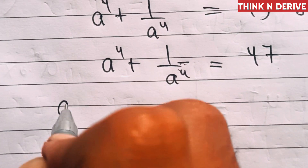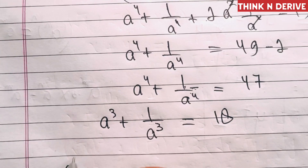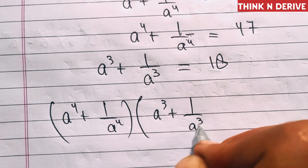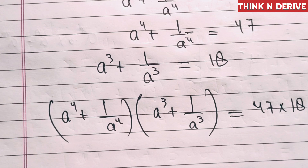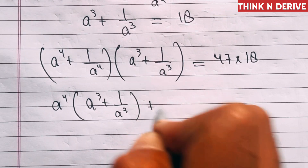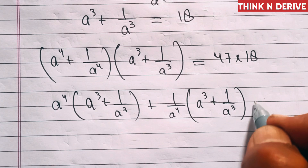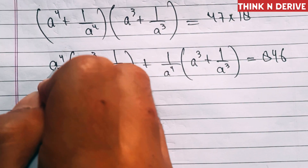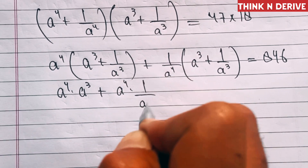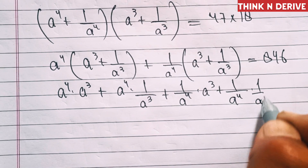We also know a³ + 1/a³ = 18. Now let's multiply (a⁴ + 1/a⁴) × (a³ + 1/a³) = 47 × 18 = 846. Expanding the left side: a⁴·a³ + a⁴·(1/a³) + (1/a⁴)·a³ + (1/a⁴)·(1/a³) = 846.